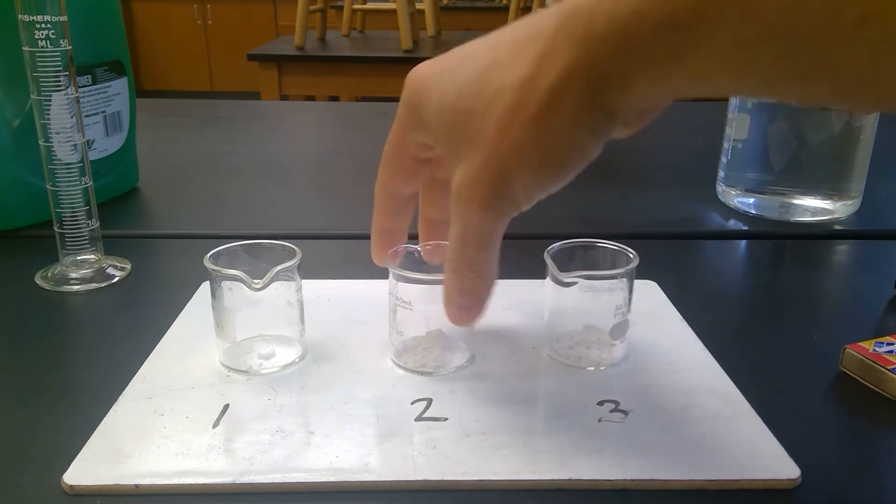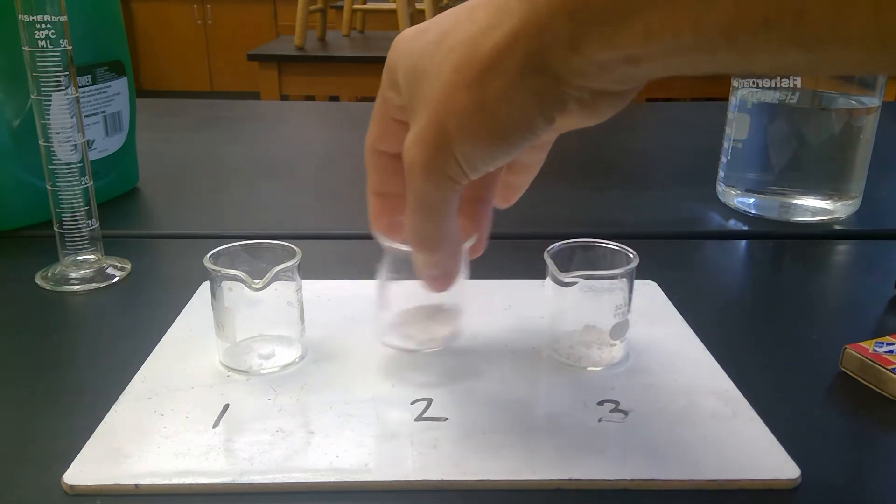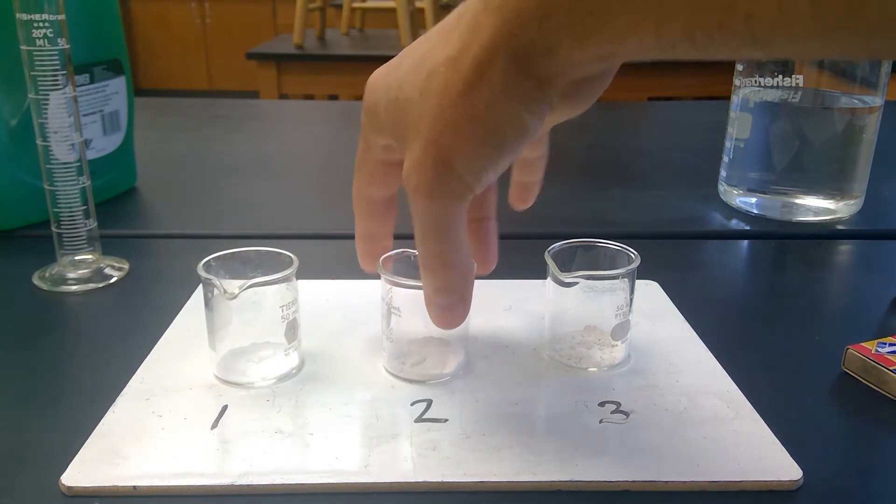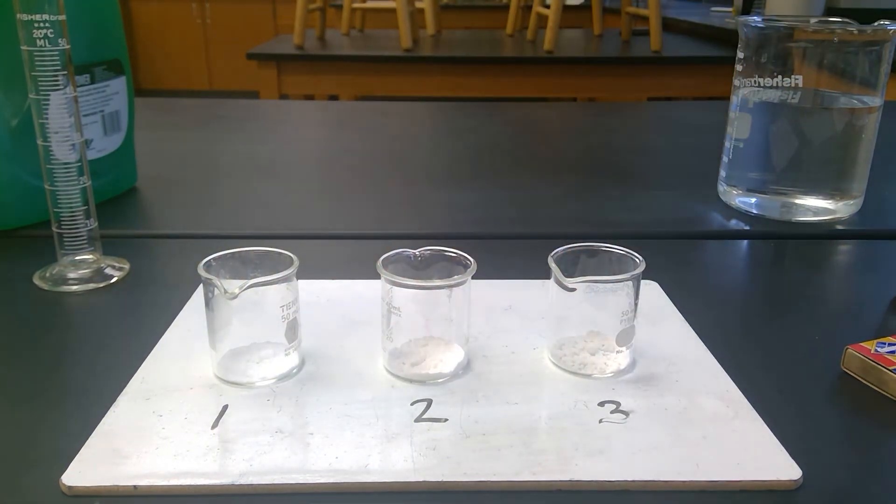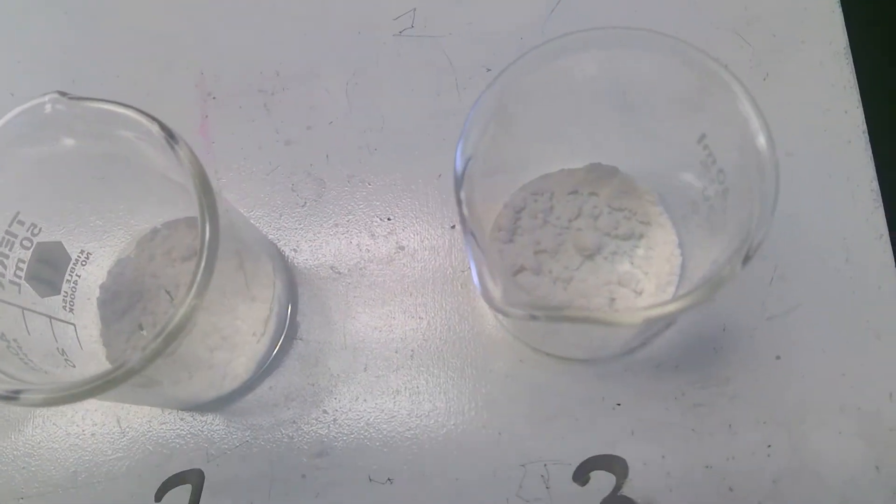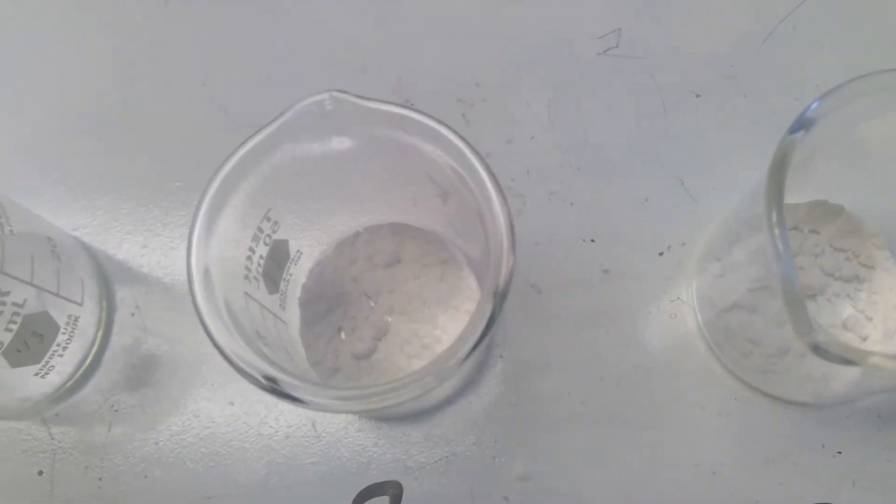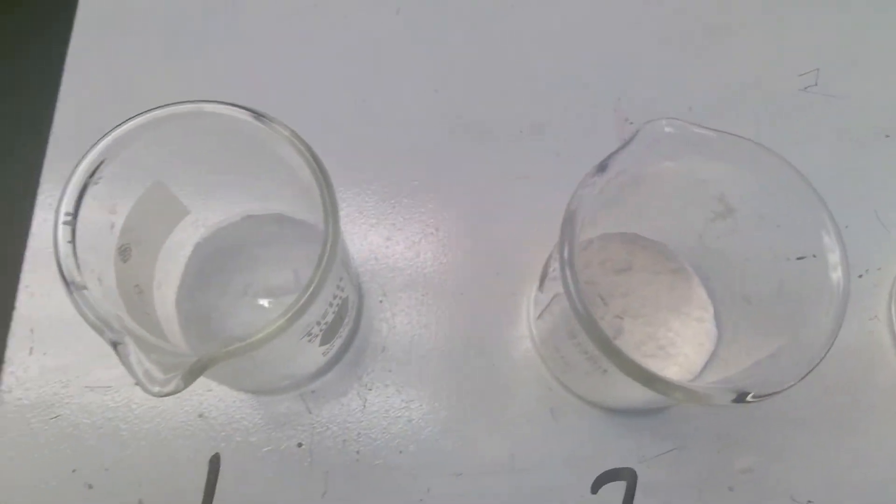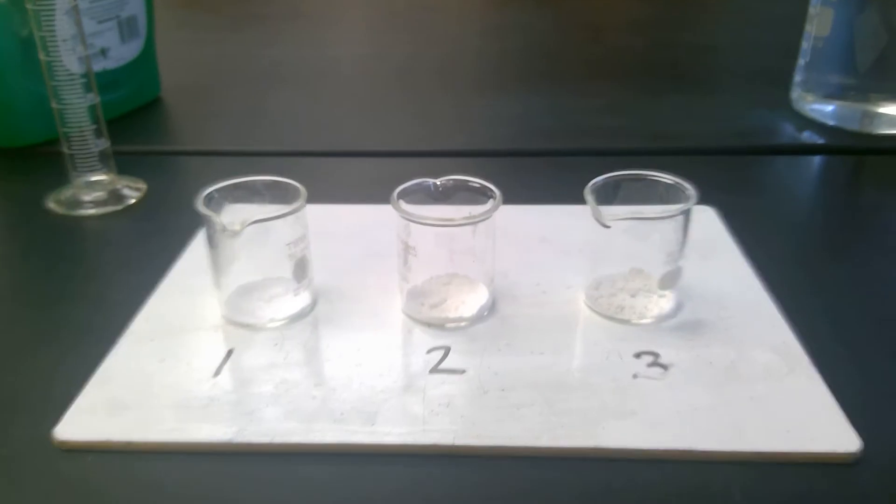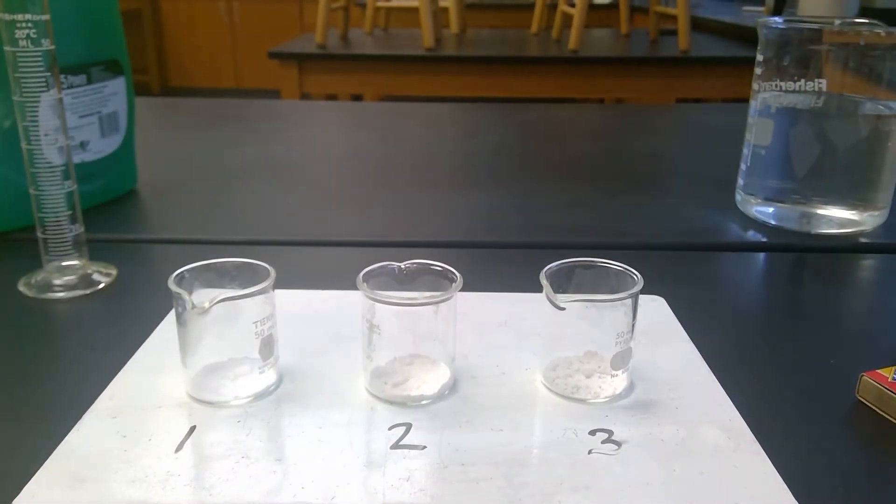Then I'm going to swirl these around to make sure they get nice and mixed up. And I'm going to make some observations of these. So they all look like dry powders. The cream of tartar looks a little bit different than the baking soda, but in general, they look fairly the same.